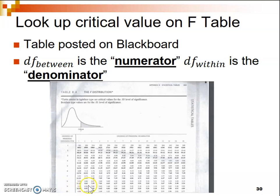You'll notice that we have two numbers — one's bolded and the other is unbolded. We're going to take the unbolded value because that corresponds to the 0.05 level of significance. We established in step 2 that we wanted to use an alpha of 0.05. Had we been using an alpha level of 0.01, we would take the bolded value. So depending on what alpha level you are using, that tells you which value to use. In this case, we use the unbolded value, which is 4.26.